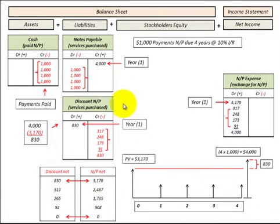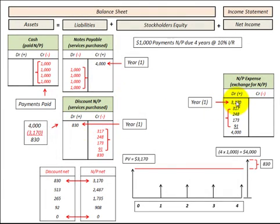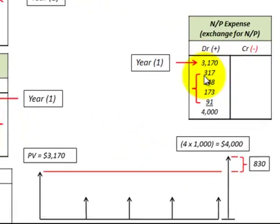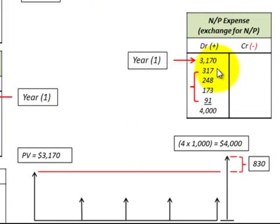We've accounted for year one — we've got everything in balance for $4,000, and then the $830 plus the $3,170 on our debit balance for the notes payable. Now let's look at the end of each of the next years where we have to record our interest expense.